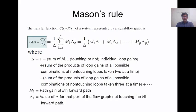The general formula for transfer function by Mason's Rule is given by: T equals one over delta, multiplied by the summation from k equal to 1 to p of mk times delta-k. We can write this as one over delta times (m1 delta-1 plus m2 delta-2 plus ... mp delta-p), where k from 1 to p represents the number of forward paths.